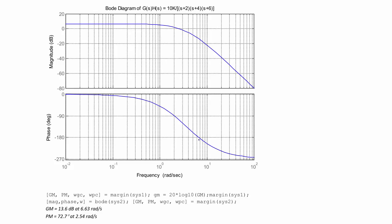The phase crossover frequency is where the phase crosses negative 180 degrees. So the phase crossover frequency is approximately ω_pc equals 6.6 radians per second. The MATLAB code shown confirms the exact values. Going up to the top graph at that same point of about 6.6 radians per second, I estimate the amount that the gain has to change to reach 0 decibels, and the gain margin is about 13 decibels. MATLAB confirms 13 decibels at 6.63 radians per second.